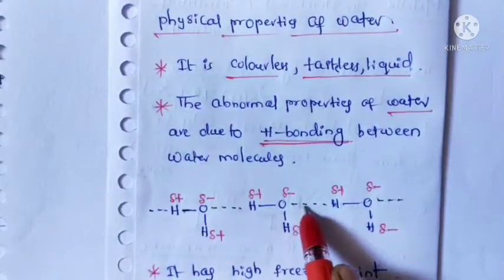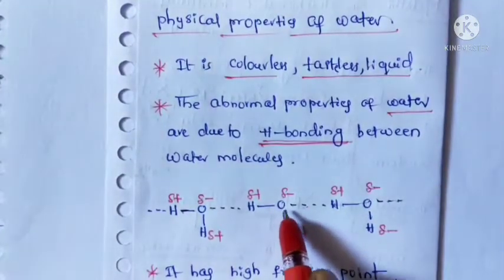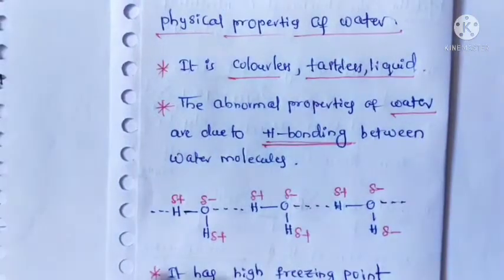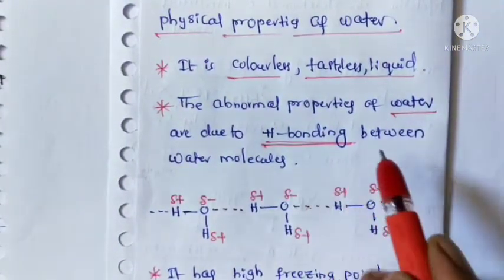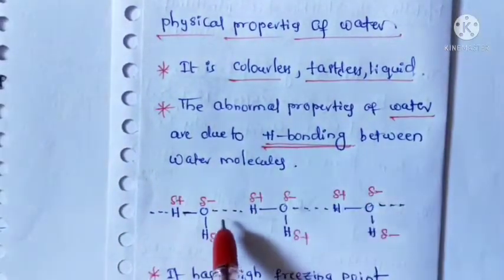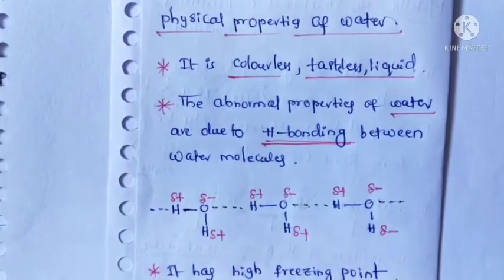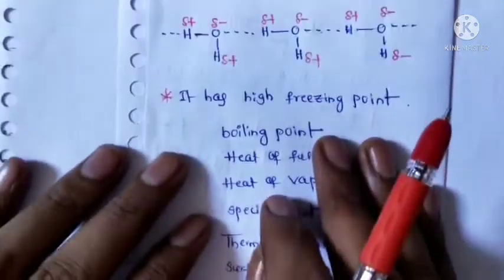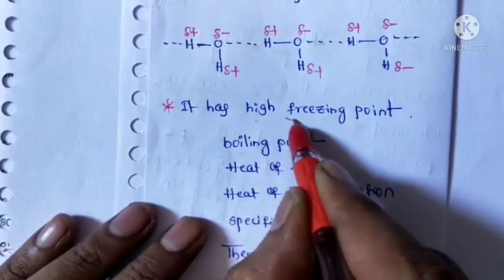Here we take three water molecules between which hydrogen bonding is shown. Remember that hydrogen bonding is always represented as dotted lines. Due to the presence of hydrogen bonding, water has a high freezing point.